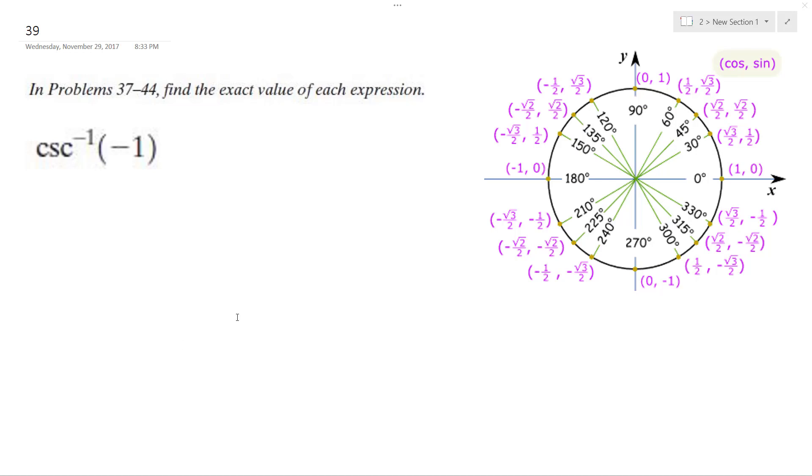I want to find the inverse cosecant of negative 1. So, what does that even mean?